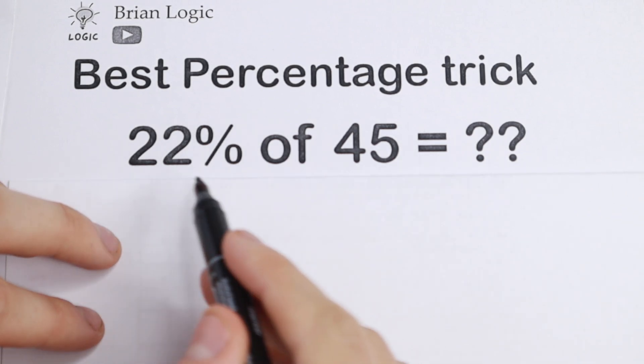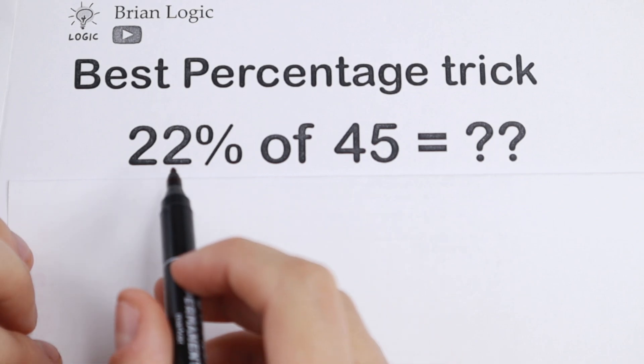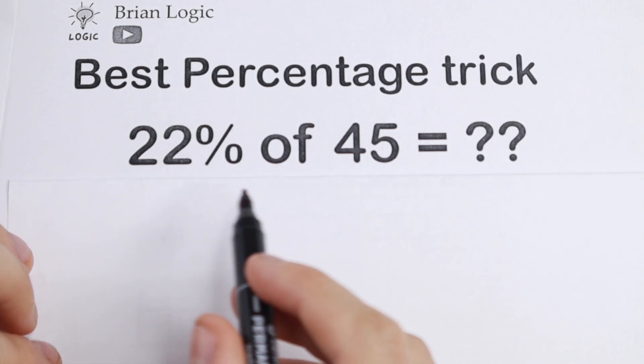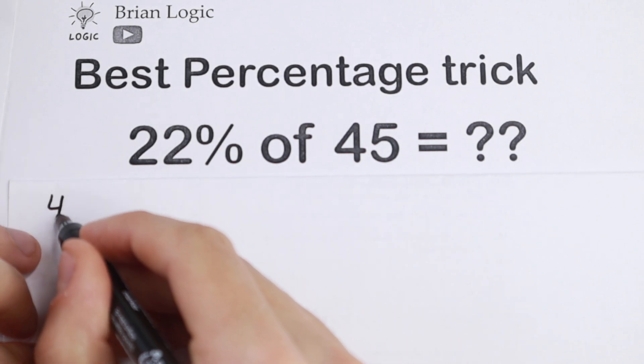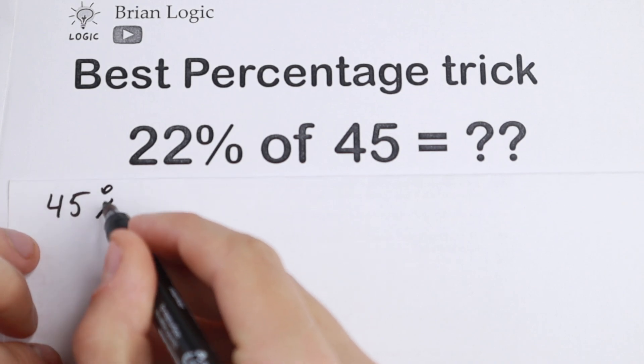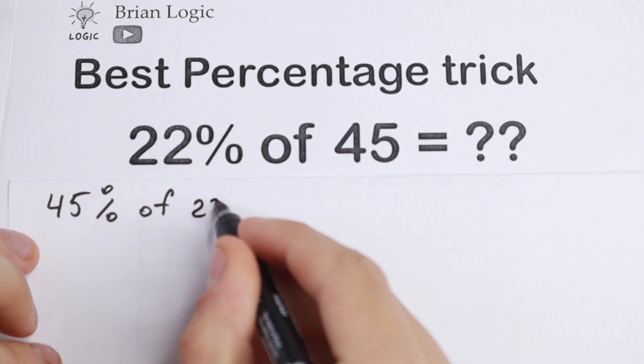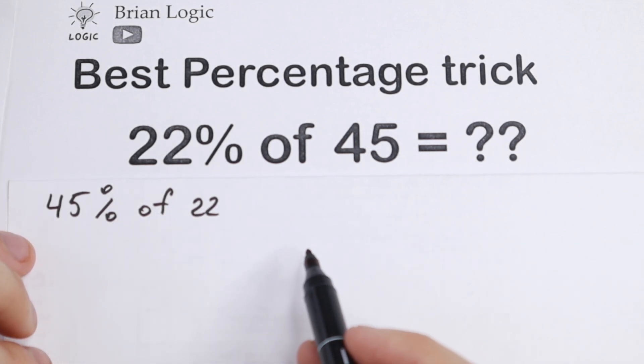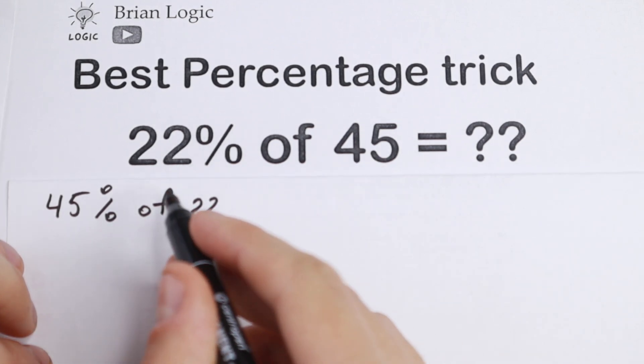If it's hard to you to find this percentage, you can swap these two numbers. This is the same as 45% of 22. This is the main trick. You can swap these two numbers.